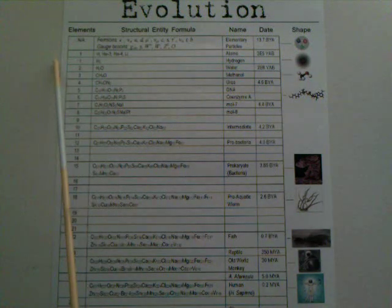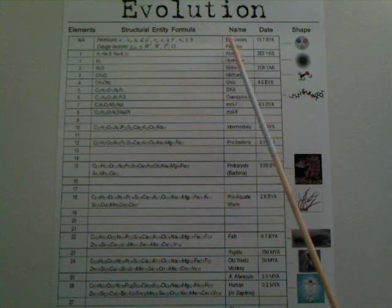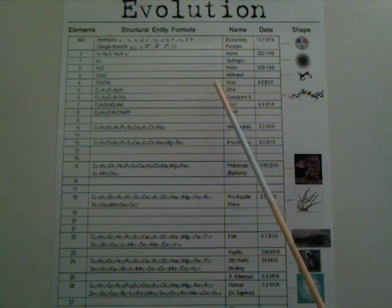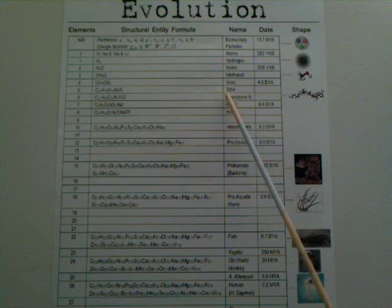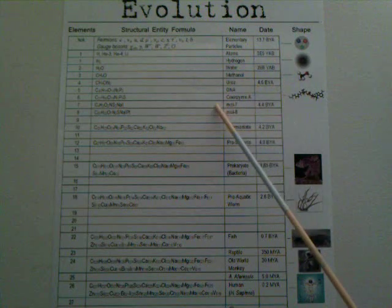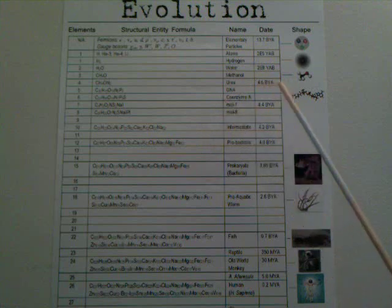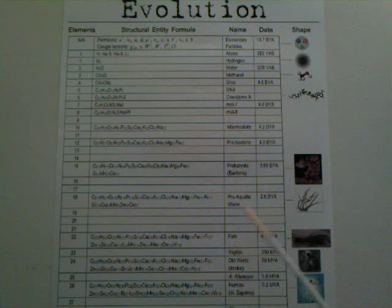The left column shows the element count involved in each structure. The center column shows the molecular formula, which are exact all the way up to coenzyme A and become approximate beyond that.